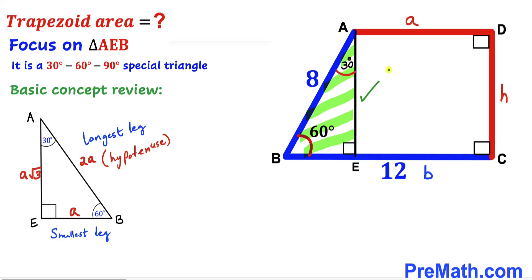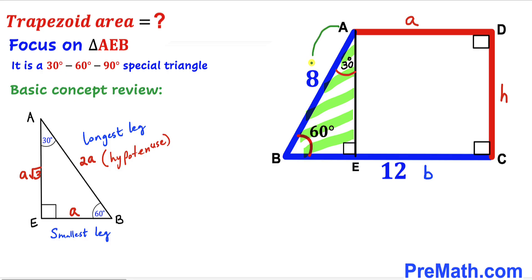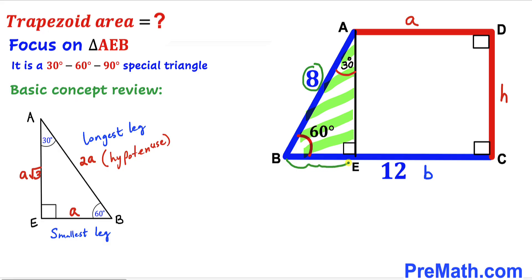Returning to our problem: in triangle AEB, BE is the smallest leg and hypotenuse AB is the longest leg. Since our longest leg AB is 8 units, the smallest leg BE is half of that — 4 units. The third leg AE is therefore 4 times the square root of 3.